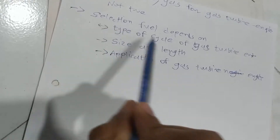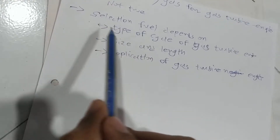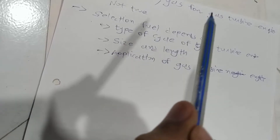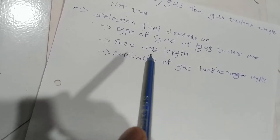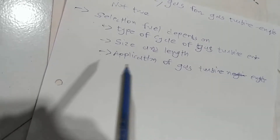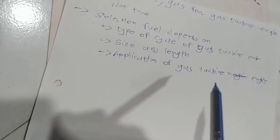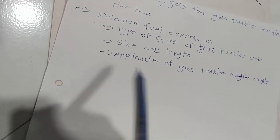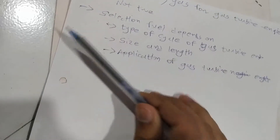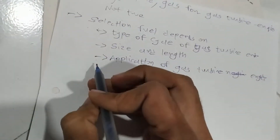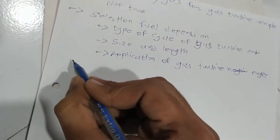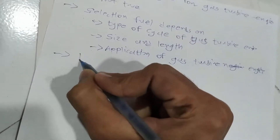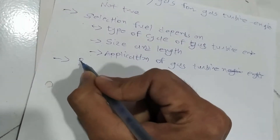So while selecting the fuel we have to understand what cycle it is going to use — open cycle or closed cycle — and the size and length of the engine, and the application of the gas turbine engine. We also use gas turbines in aircraft, and we cannot use just any fuel in aircraft, so there are some requirements of fuel we have to understand.